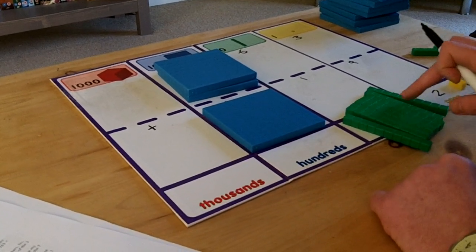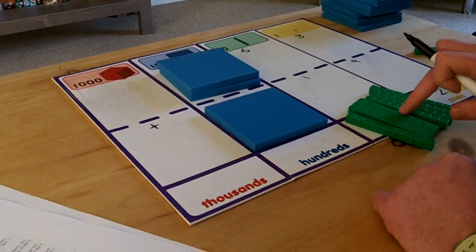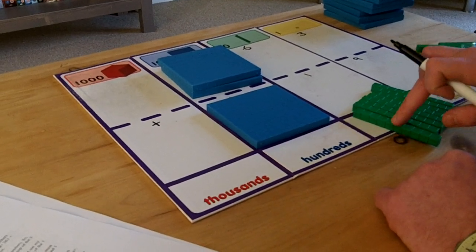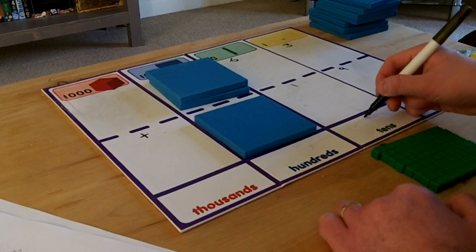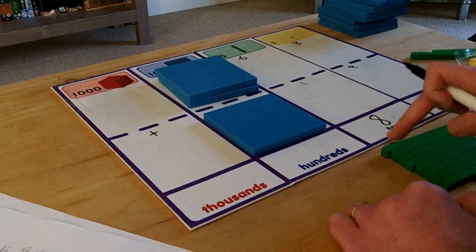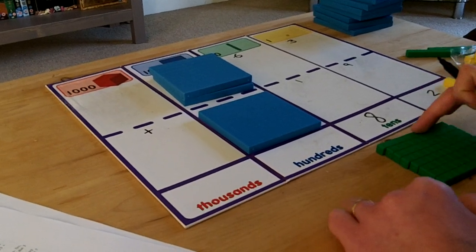And that gives me 1, 2, 3, 4, 5, 6, 7, 8. As there are 8 rows of 10 blocks this means I need to put 8 here to represent the 80 shown by this arrangement here.